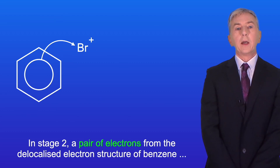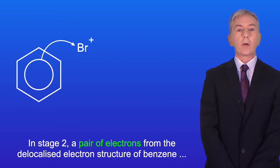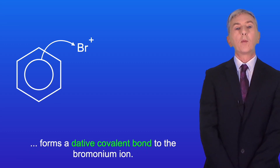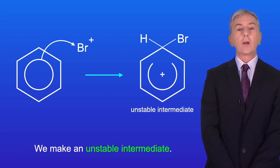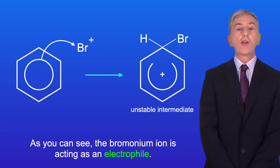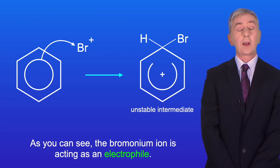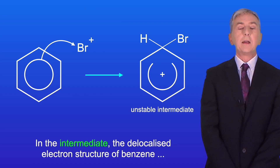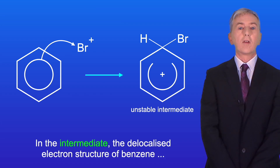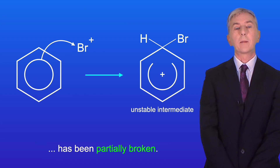In stage two, a pair of electrons from the delocalized electron structure of benzene forms a dative covalent bond to the bromonium ion, and we make an unstable intermediate. The bromonium ion is acting as an electrophile. In the intermediate, the delocalized electron structure of benzene has been partially broken.